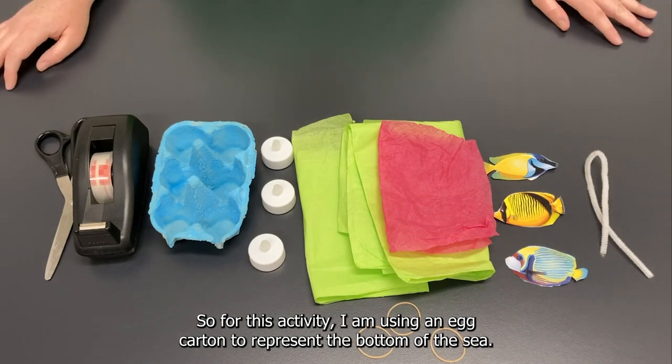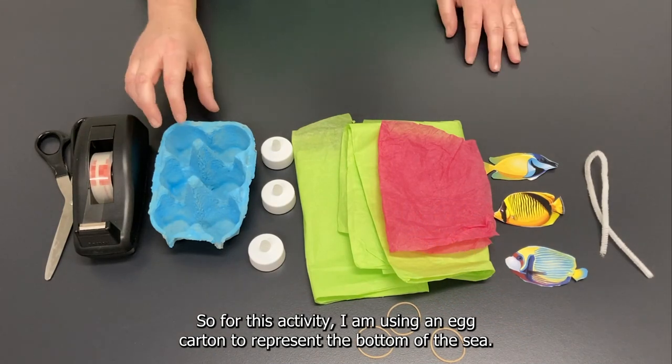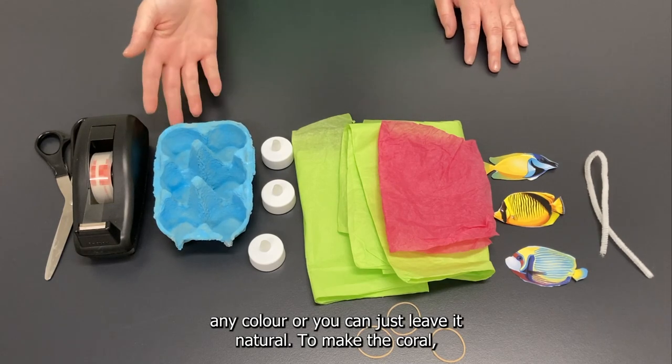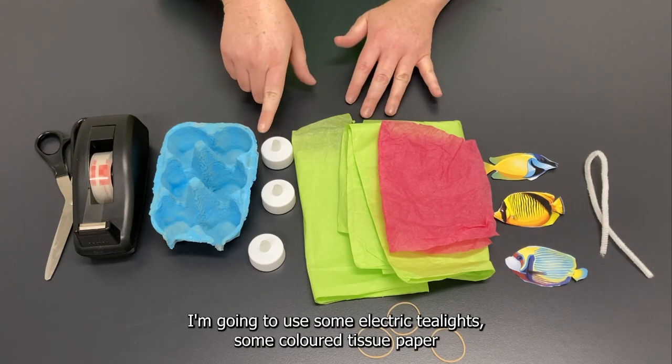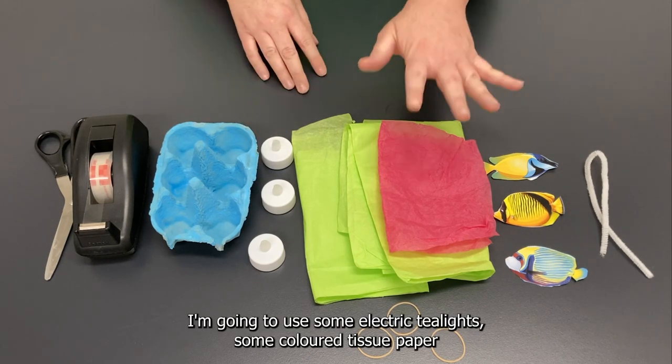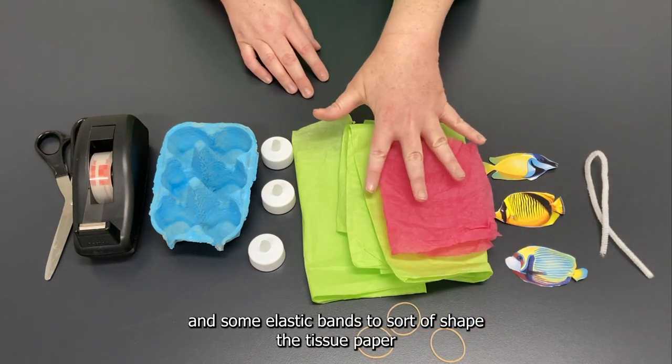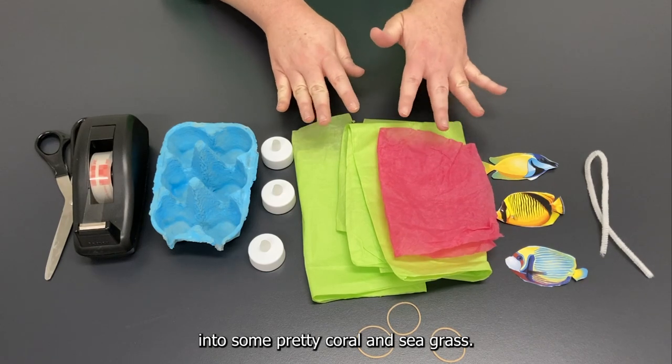So for this activity I am using an egg carton to represent the bottom of the sea. Now I have painted mine blue but you can paint it any color or you can just leave it natural. To make the coral I'm going to use some electric tea lights, some colored tissue paper and some elastic bands to sort of shape the tissue paper into some pretty coral and sea grass.